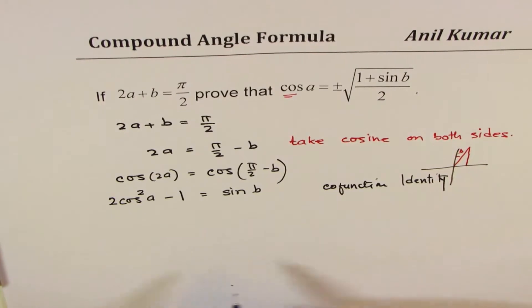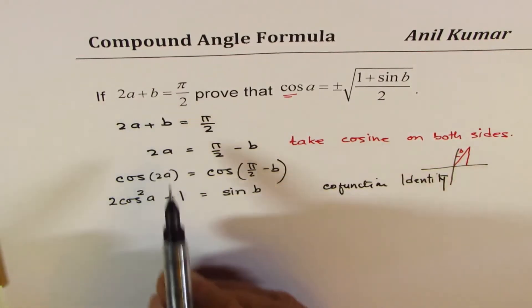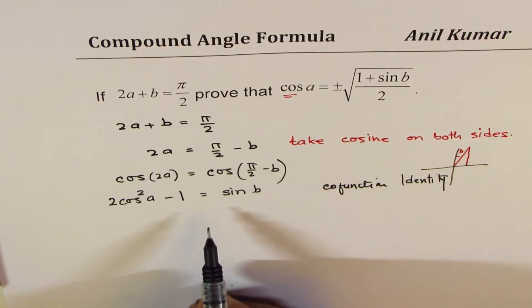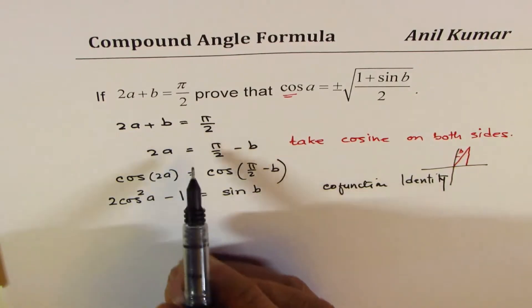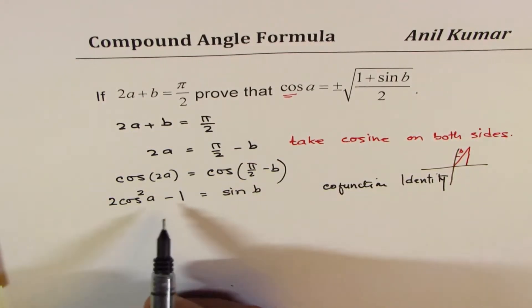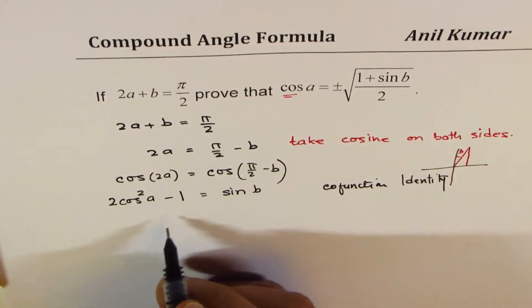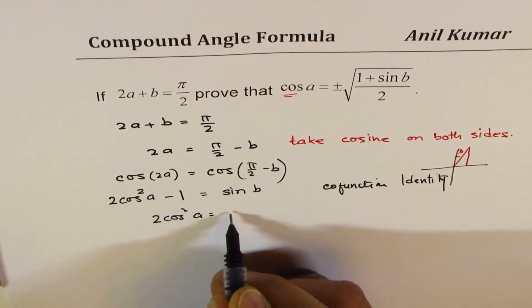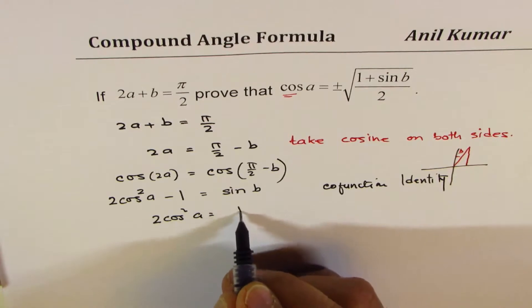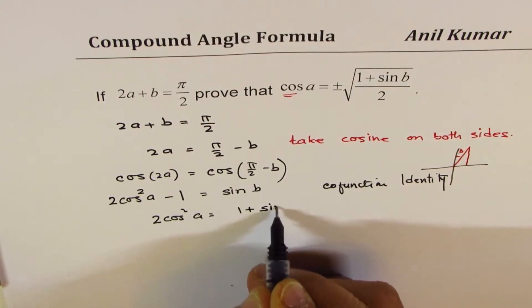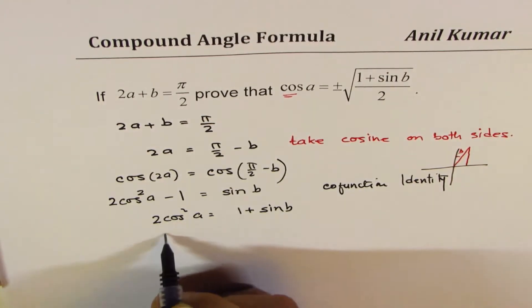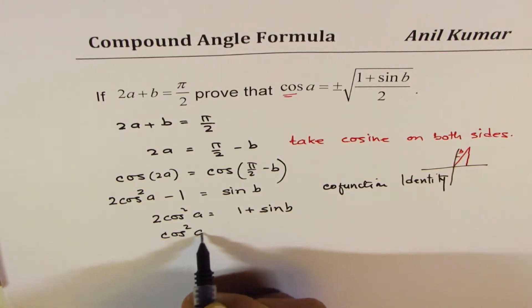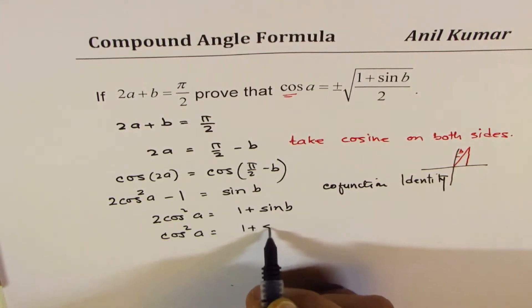Now let's rearrange it. What we get here is 2 cos square a equals, taking one on this side, 1 plus sin b. Dividing by 2, we get cos square a equals 1 plus sin b divided by 2.